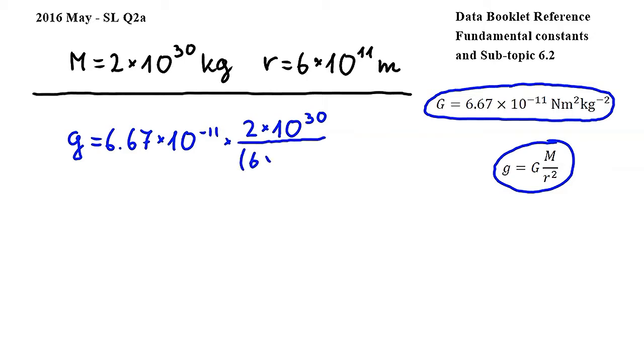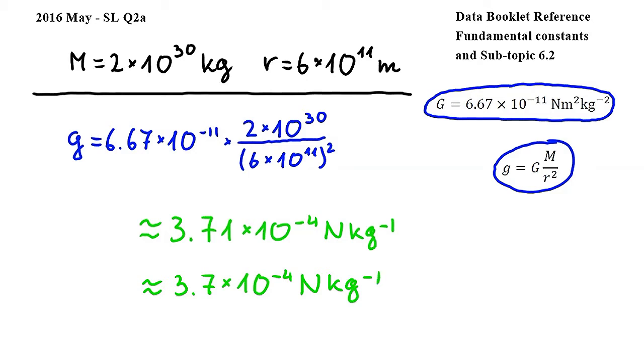over 6 times 10 to the power of 11 to the power of 2. Carrying out this calculation, we get approximately 3.71 times 10 to the power of negative 4 newtons per kilogram, which is approximately 3.7 times 10 to the power of negative 4 newtons per kilogram, which is what we wanted to show.